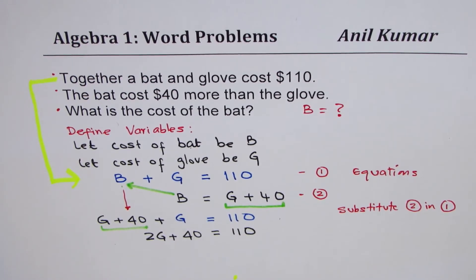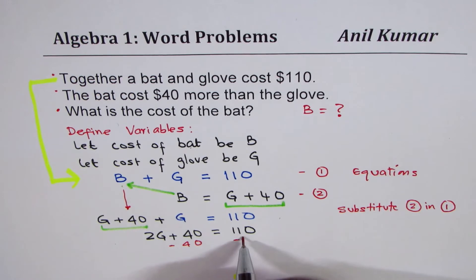Now, you can combine these two and you can write 2G plus 40 equals to 110. We want to find what G is. We don't want 40 here. So, we take away 40 from each side.